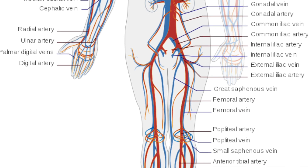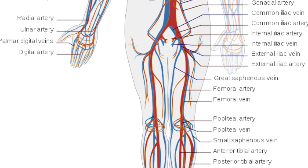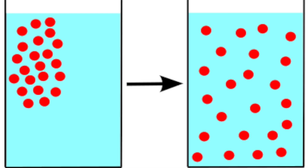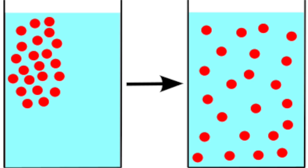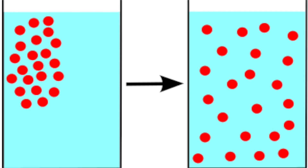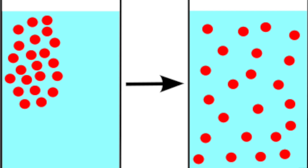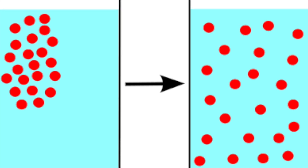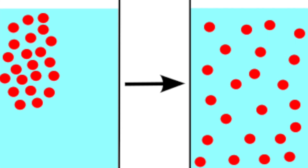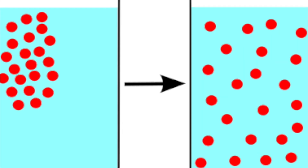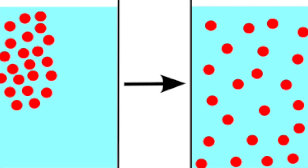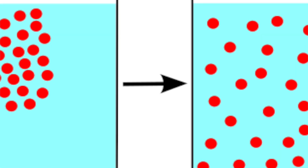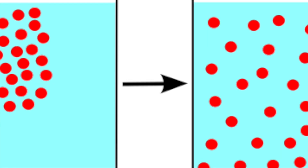Systems have adaptations in them to make gas exchange more efficient. For example, they may have a bigger surface area which means that diffusion can take place quicker, and other adaptations include the increase of the concentration gradient across the membranes.